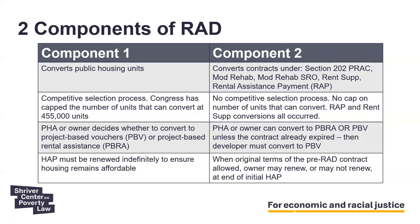In RAD Component 1, the housing assistance payment contract must be renewed indefinitely to ensure the housing remains affordable in perpetuity. Under RAD Component 2, however, it must follow the previous commitments the owner made in terms of affordability. If the old contract allowed the option to not renew a future contract, the owner retains that option, and those developments need to be monitored just like all project-based Section 8 developments, where there is a risk of opt-out or non-renewal of the HAP contract.